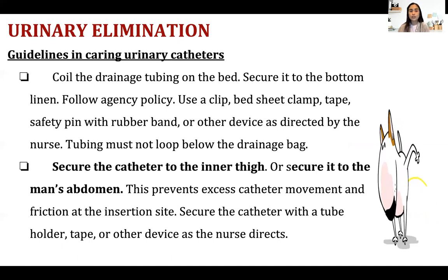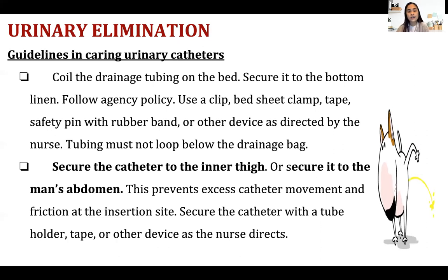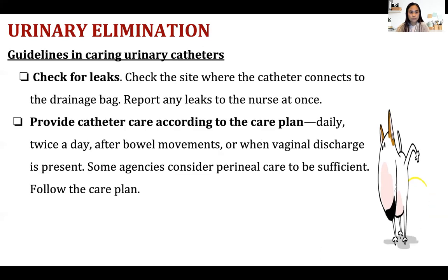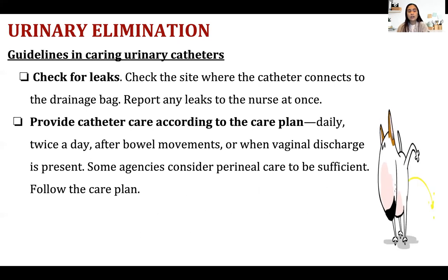Coil the drainage tubing on the bed and secure it to the bottom linen according to agency policy. For males, secure the catheter on the lower abdomen; for females, on the thigh — though commercial catheter straps placed on the thigh are commonly used for both. Check for leaks, especially if the catheter has been in place a long time, and change it immediately if leaking.